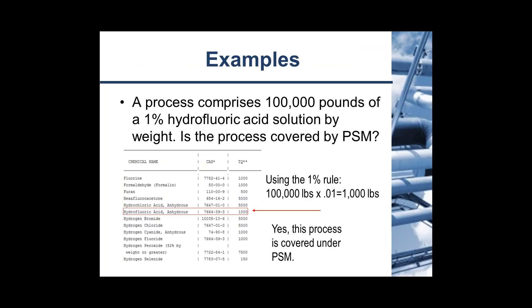The first example: a process comprises 100,000 pounds of a 1% hydrofluoric acid solution by weight. Is this process covered by PSM? The first step is to go to Appendix A of OSHA's PSM standard and look up hydrofluoric acid. As you can see on the screen, there is no concentration associated with this chemical. Therefore, the 1% rule applies — if 1% or higher of hydrofluoric acid is in the process, it may be OSHA PSM-regulated depending on whether the threshold quantity is met. Taking the amount of pounds times the concentration gives 1,000 pounds of hydrofluoric acid, which does meet the threshold quantity stated in the PSM standard. So this is a covered process.